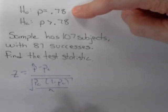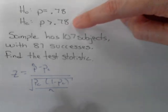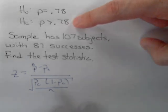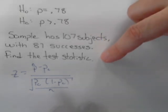The null hypothesis is that the population proportion is 0.78. The alternative is that the population proportion is greater than 0.78. A sample has 107 subjects with 87 successes. Find the test statistic.